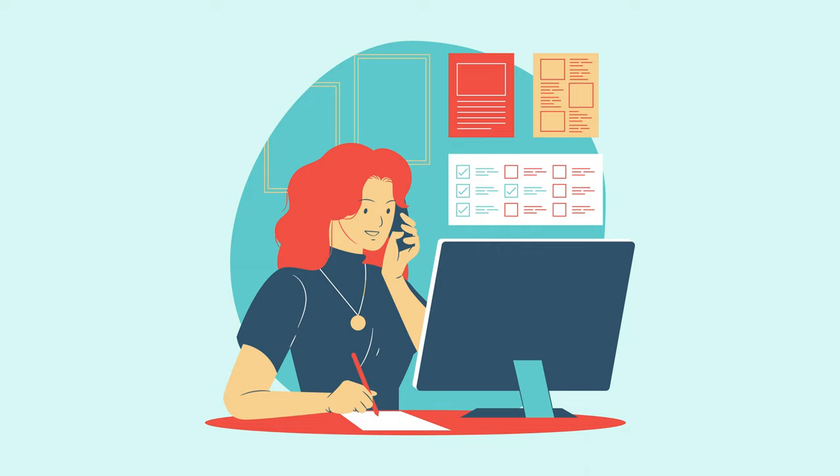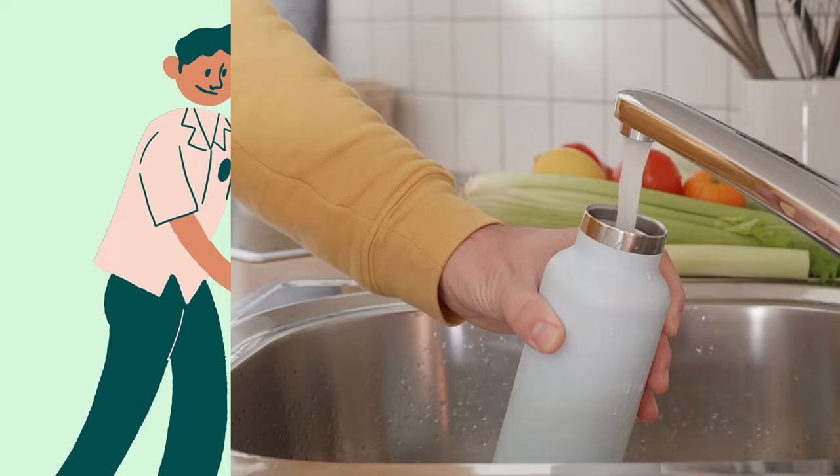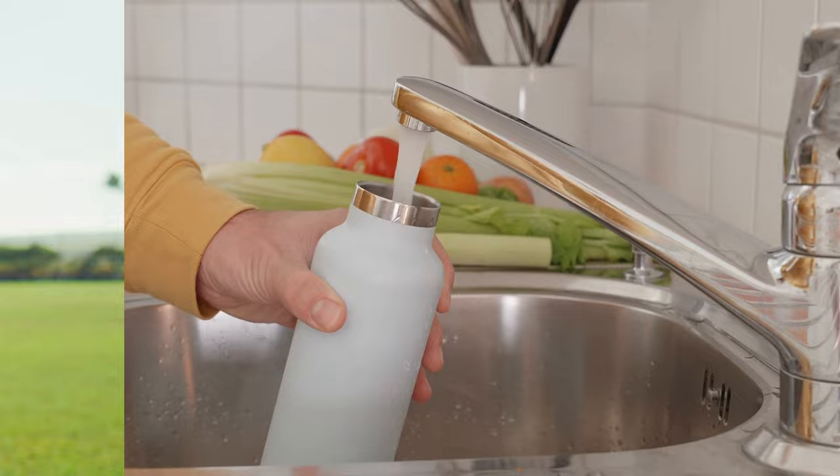Now, how can we apply these takeaways in real life? Let's say you're launching a new eco-friendly water bottle. Start by researching your potential customers. What are their concerns about the environment? What features are they looking for in a reusable water bottle? Then, simplify your message, focusing on one main benefit that your product offers. For example, stay hydrated, save the planet.